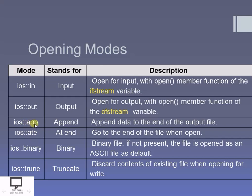Now let's go forward to the 'app' mode, which is the append mode. Append mode allows you to preserve the data available in your already existing file, and the content you currently want to write will get appended at the end of the file. The drawback of the out mode was that if you had an already existing file and wanted to add data, out mode was not suitable. The app mode is suitable for preserving previous data and appending extra content at the end of the file, moving the pointer to the end of the file when opened.